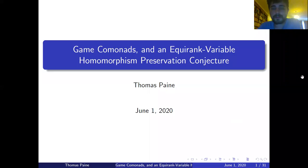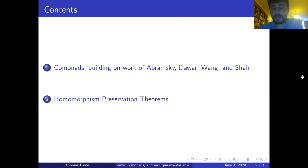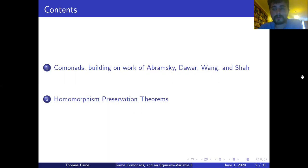Hi, everyone. My name's Thomas Payne. I'm here to talk about game comonads and an equi-rank variable homomorphism preservation conjecture — the title pretty much describes the two parts of the talk. Part one is on game comonads, building on work: one paper on the pebbling comonad by Abramsky, Dawah and Wang, and another on similar comonads coming out soon by Abramsky and Shah. The application is to a homomorphism preservation theorem, a slight refinement of what was called the equi-rank homomorphism preservation theorem, proved by Rossmann.